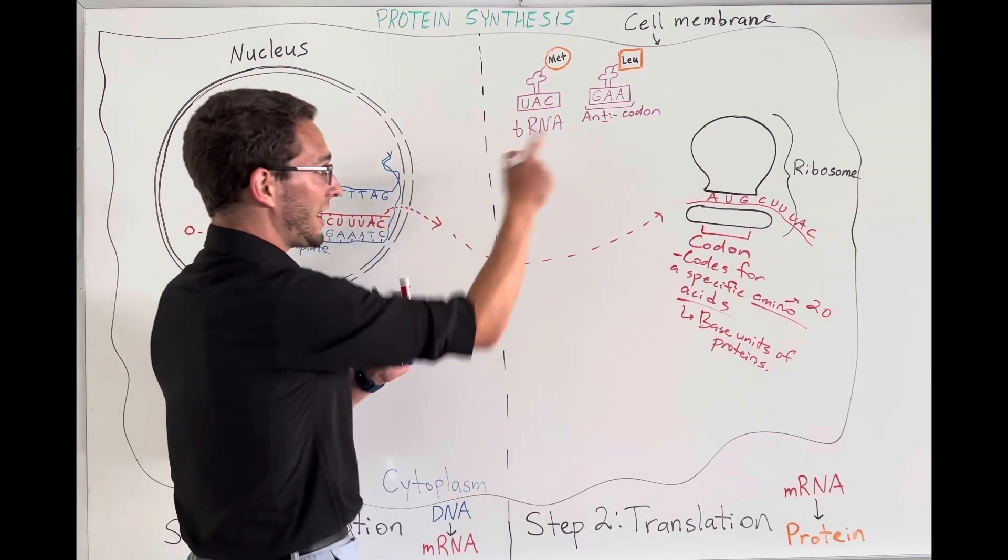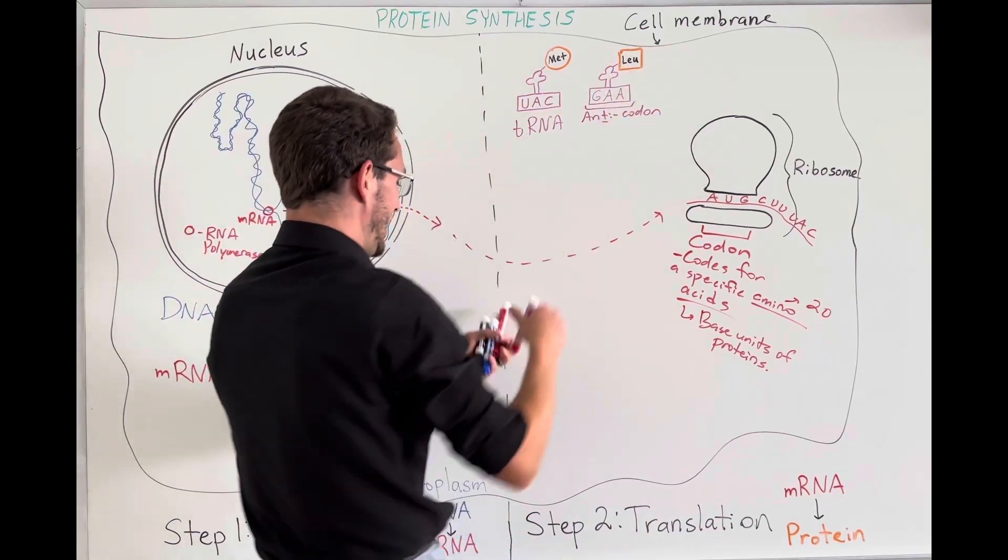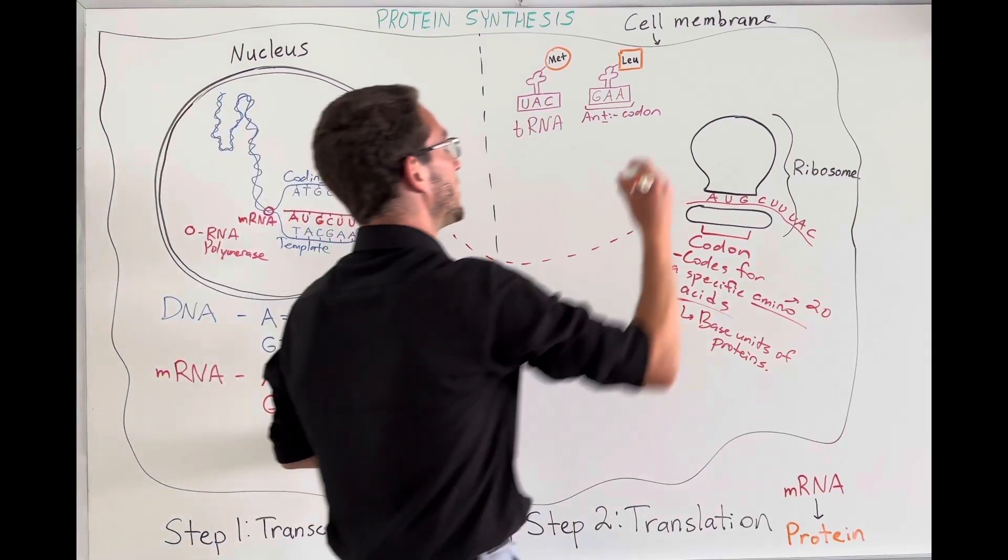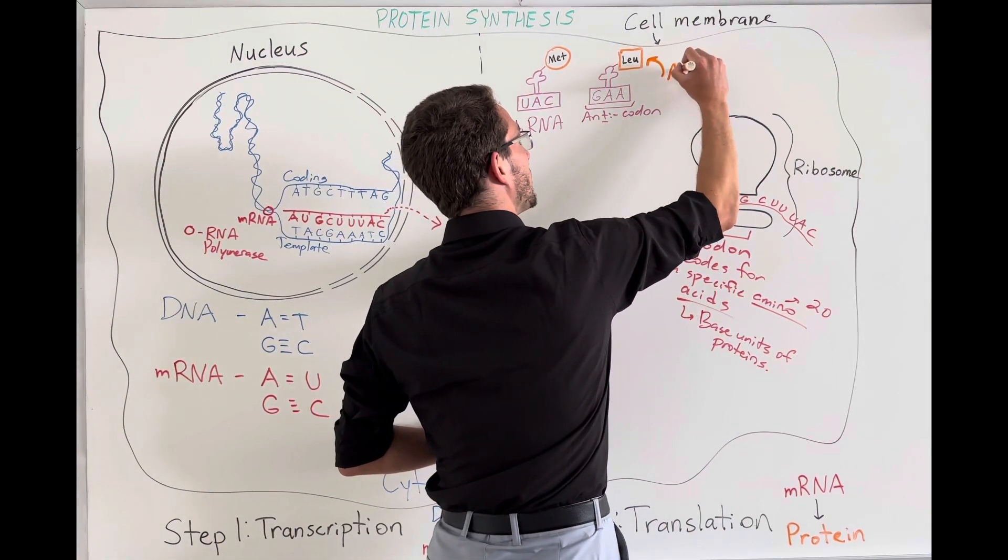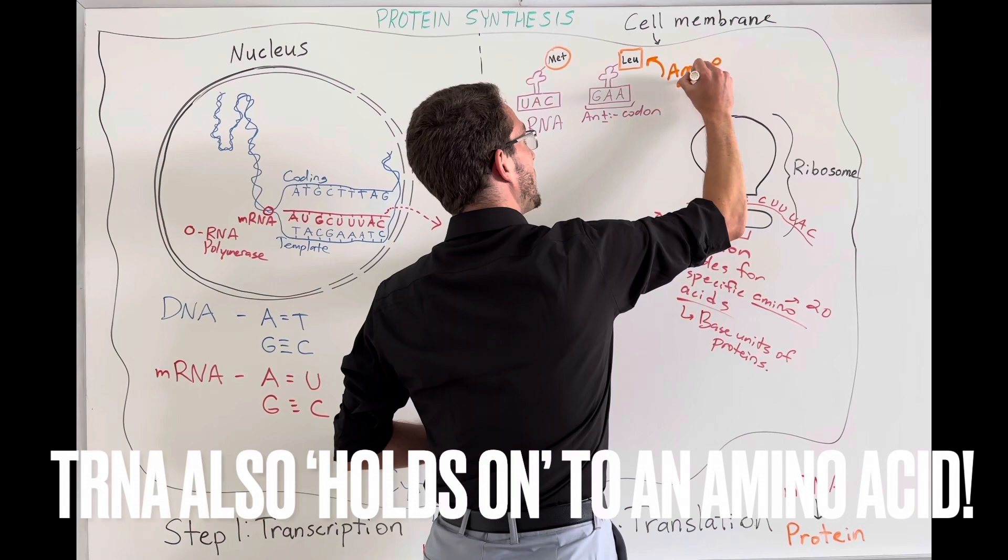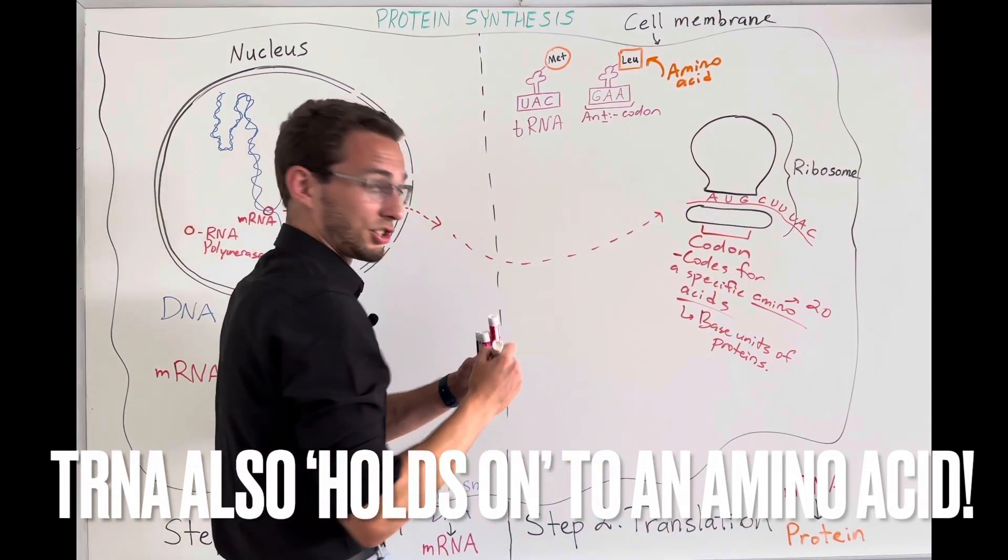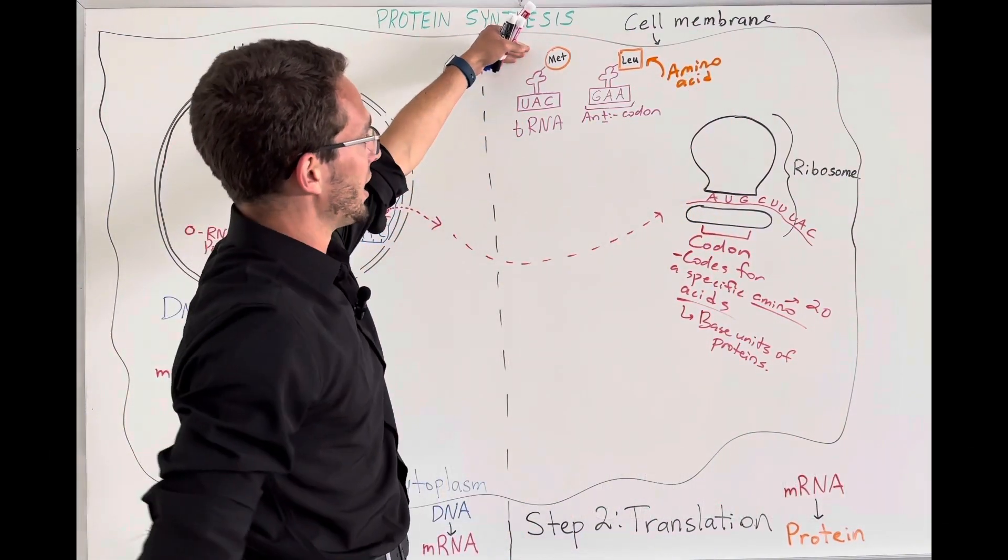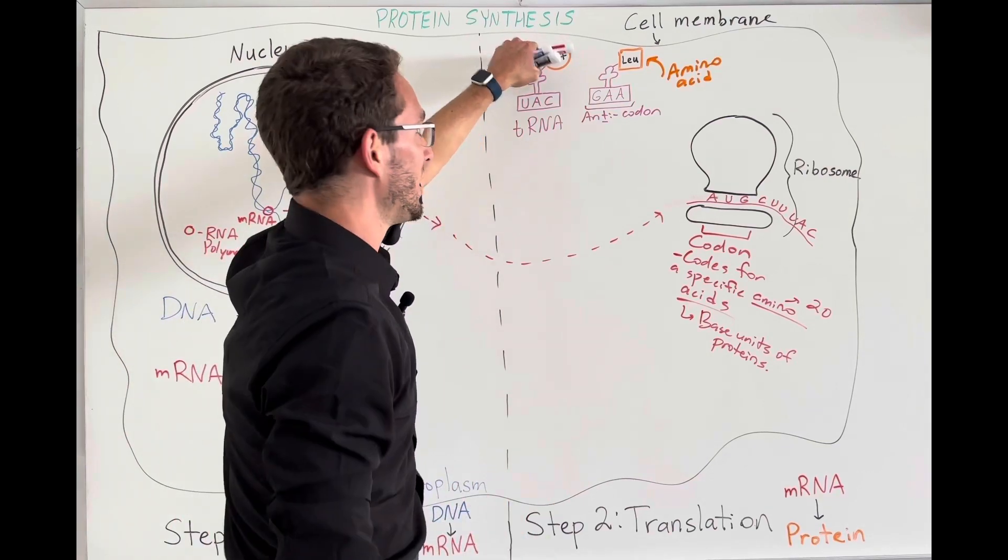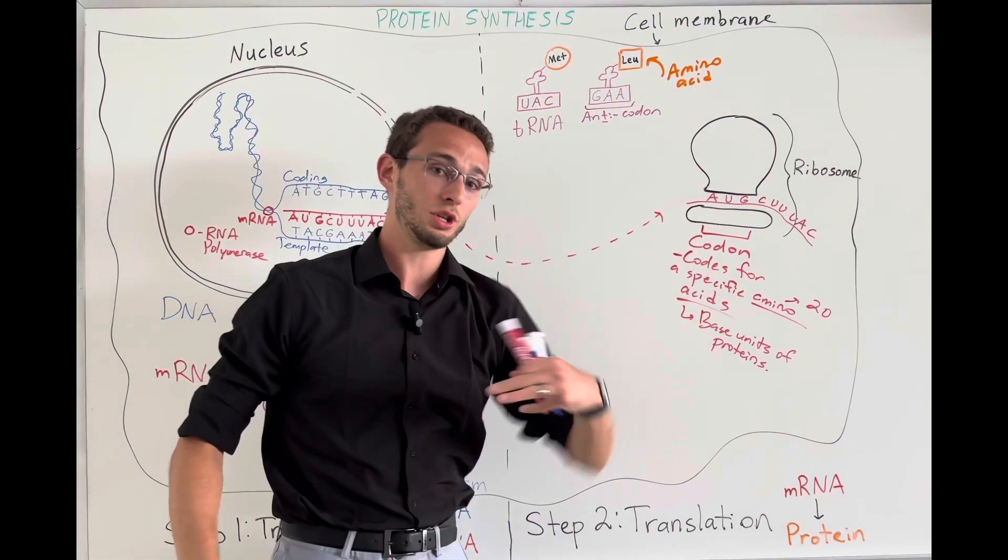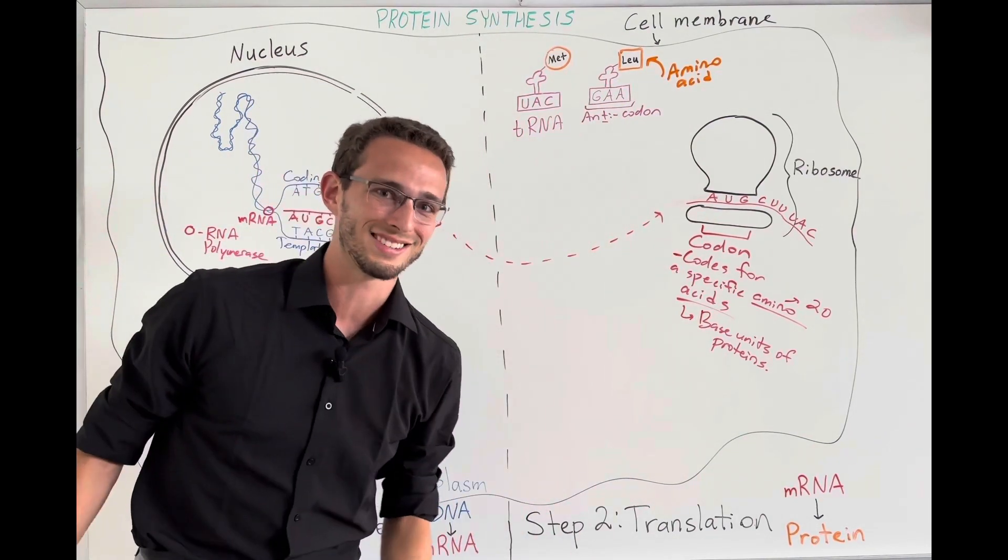And this anticodon, check it out, contains, or is holding, better word for that, the amino acid. So on the tRNA, there are amino acids chilling on it. So in these two tRNAs, I've got MET, which stands for methionine, and LEU, that stands for leucine. Those are two of the 20 amino acids.